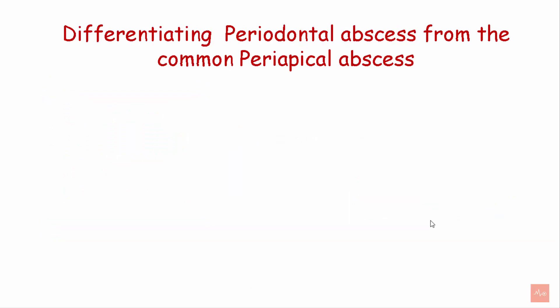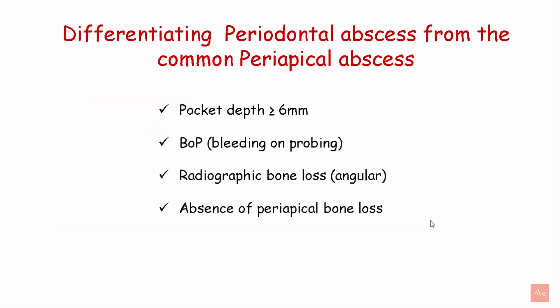Differentiating periodontal abscess from the common periapical abscess can be done based on the following findings. Periodontal abscess has a pocket depth of 6 mm or more, shows bleeding on probing, and shows angular bone loss on radiograph but absence of periapical bone loss.